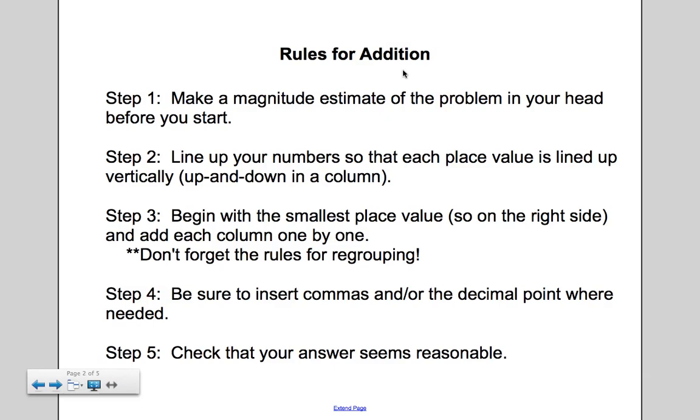Step three is begin with the smallest place value. So you're going to go to the very right side of the problem and add each column one by one. We start on the right. We go column by column. And don't forget the rules for regrouping. Sometimes you'll need to regroup and carry a number up to the top of the next column.